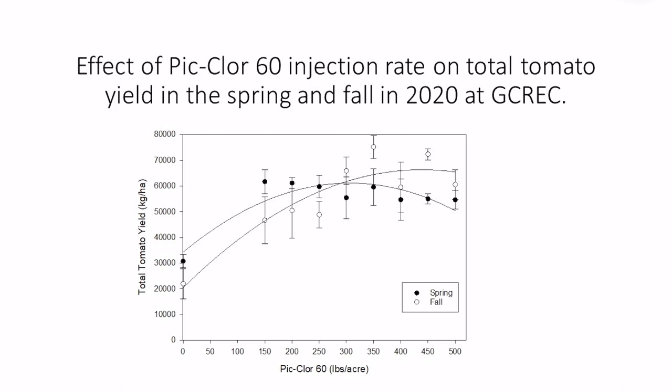The last graph shows the effect of different rates of Pic Clor-60 on total tomato yield. The general pattern is very similar between seasons. The important message is that tomato yields at no fumigation are very low, and even at low rates as low as 150 pounds per acre, you get a significant yield boost in both seasons. The non-linear regression shows a continued yield increase up to around 300 to 350 pounds per acre, at which point it begins to level off and even decrease in one season. To maximize tomato yield, you need around 300 to 350 pounds per acre, even under TIF plastic mulch.